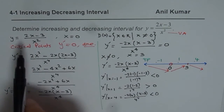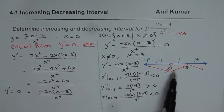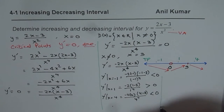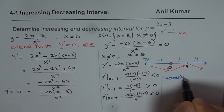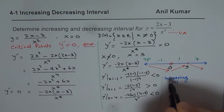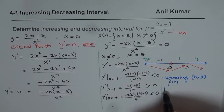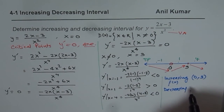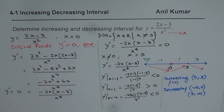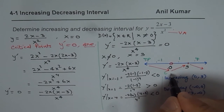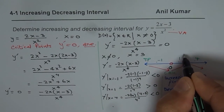So we can now state the increasing and decreasing intervals. The function is increasing on the interval (0, 3). The function is decreasing on (minus infinity, 0) — where there is a discontinuity at 0 — and also decreasing on (3, plus infinity). From this analysis, x equals 3 is a local minimum and the region around x equals 0 corresponds to a local maximum.